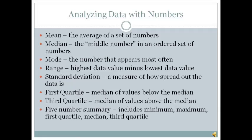The number that appears most often is called the mode. A set of data always has a mean, median, and range, but it might not always have a mode. It also could have more than one mode if, say, two numbers both appear twice and no number appears three times. The range is the highest data value minus the lowest data value.